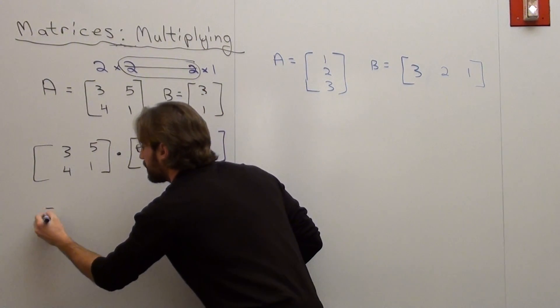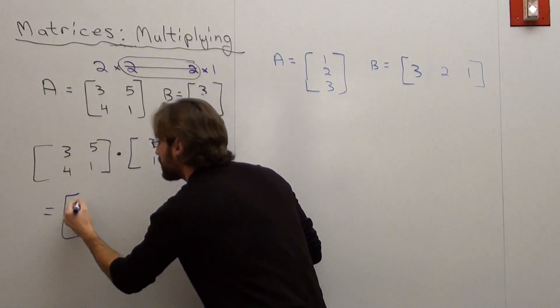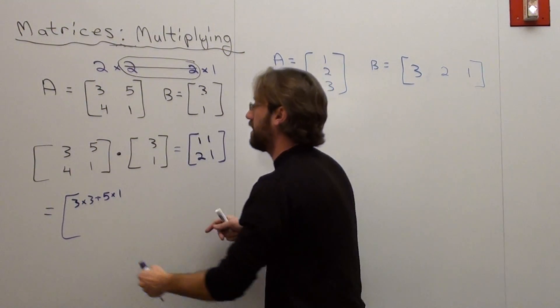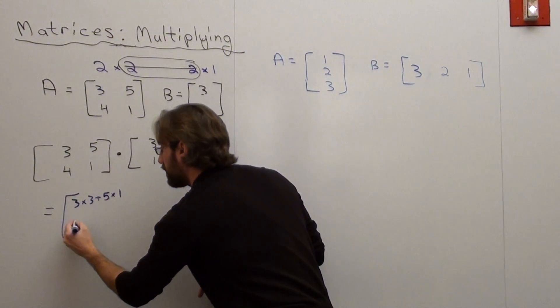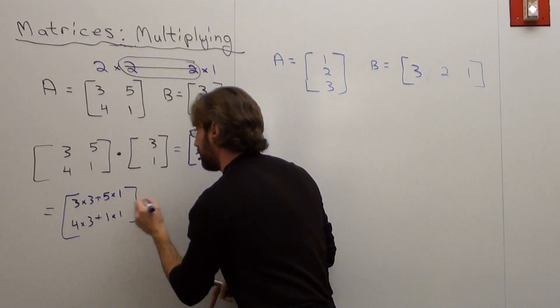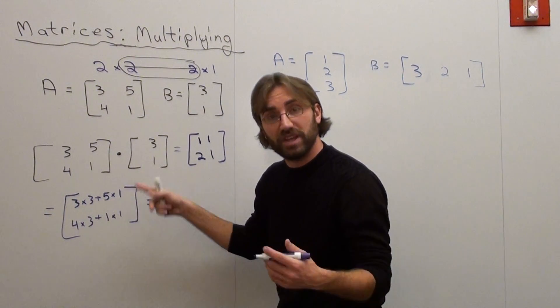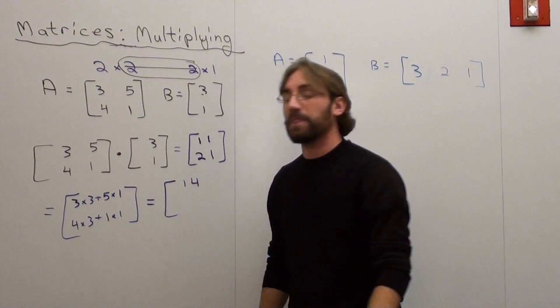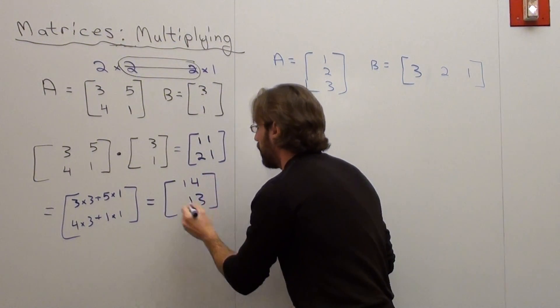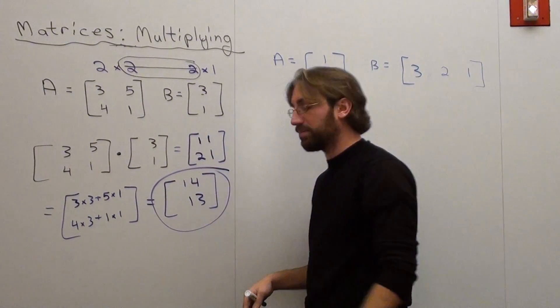It's 3 times 3, remember we're doing rows versus columns, 3 times 3 plus 5 times 1. Next one is 4 times 3 plus 1 times 1. Whatever that is, is my answer. 3 times 3 is 9, 5 times 1 is 5, 9 plus 5 is 14. 4 times 3 is 12, plus 1 times 1, which is 1, 12 plus 1 is 13. When I multiply these two matrices together, my answer is the 2 by 1 matrix 14, 13.